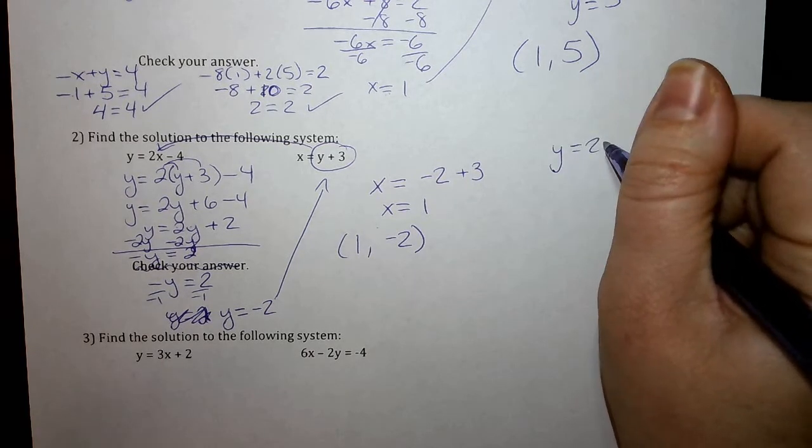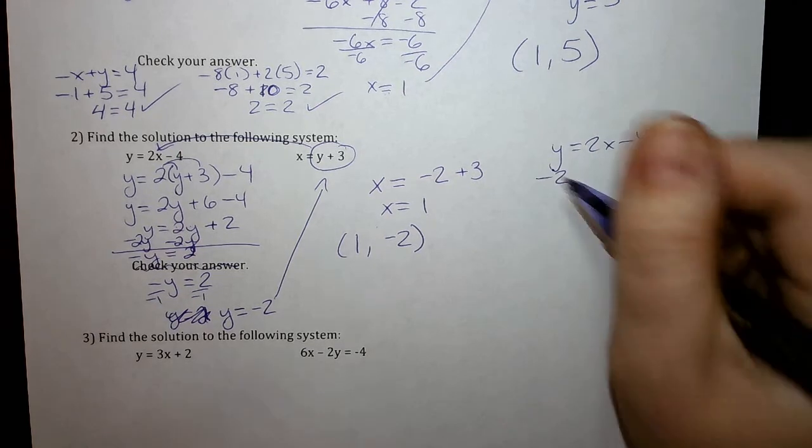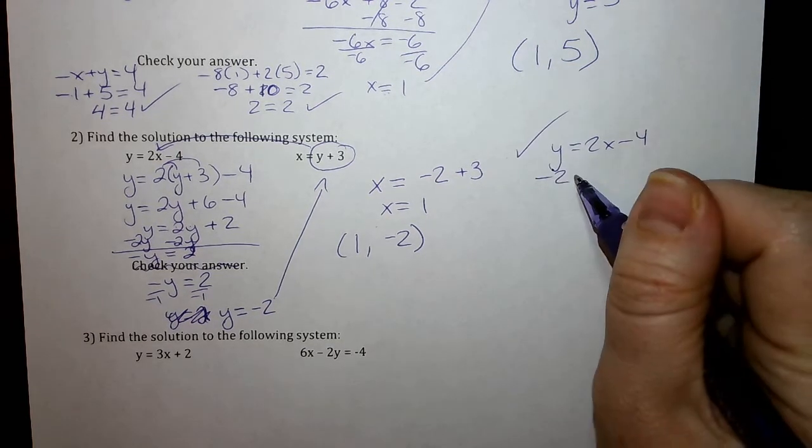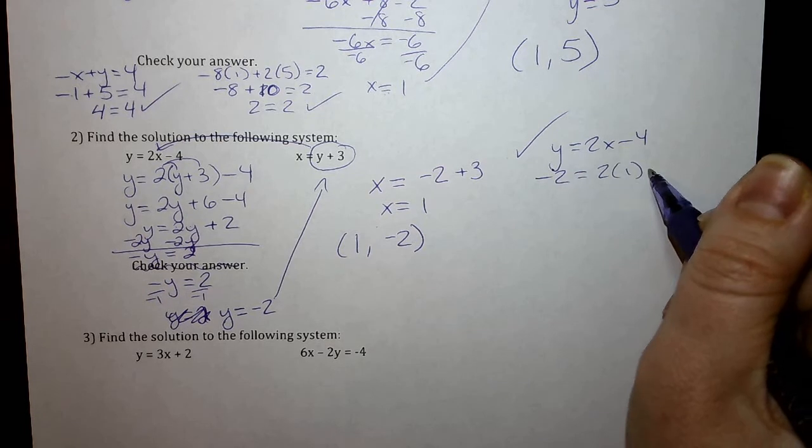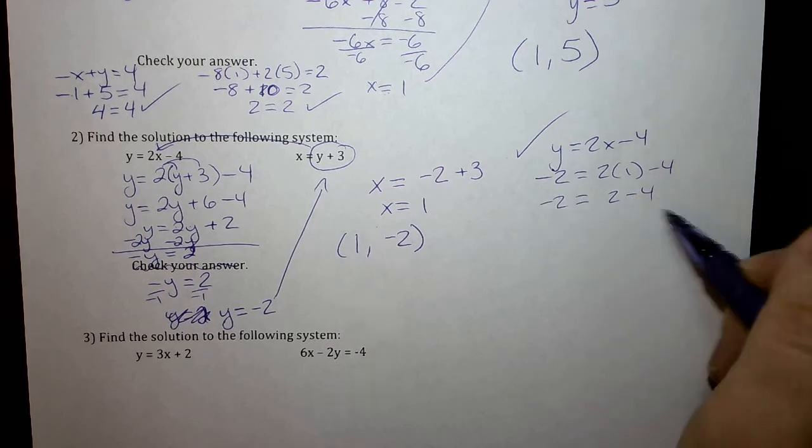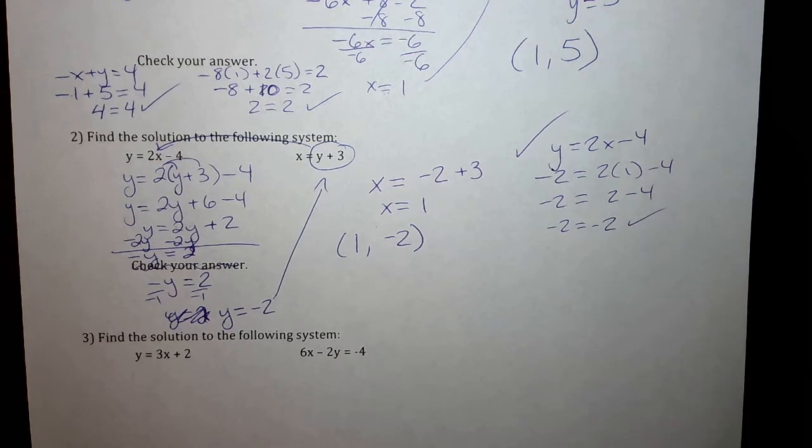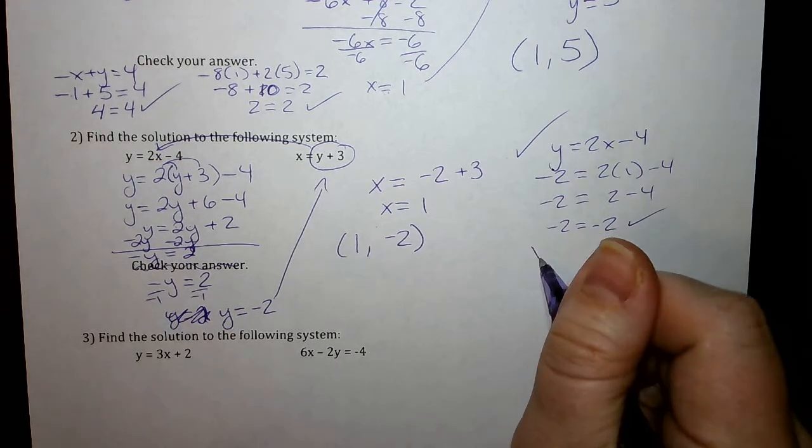All right. So our first equation, y equals 2x minus 4. Y, I'm plugging in negative 2. This is my checking. Equals 2 times 1 minus 4. 2 times 1 is 2. 2 minus 4. Negative 2 equals negative 2. Yes, it works in the first equation.